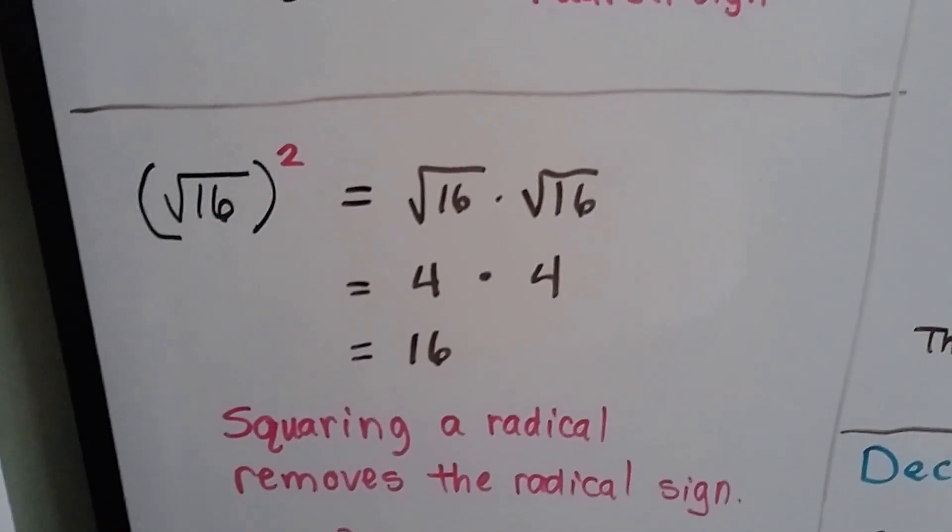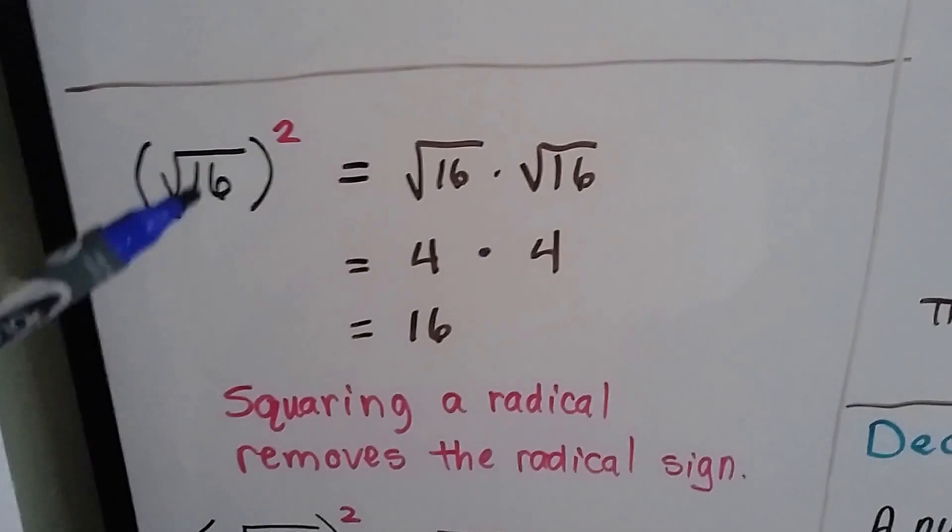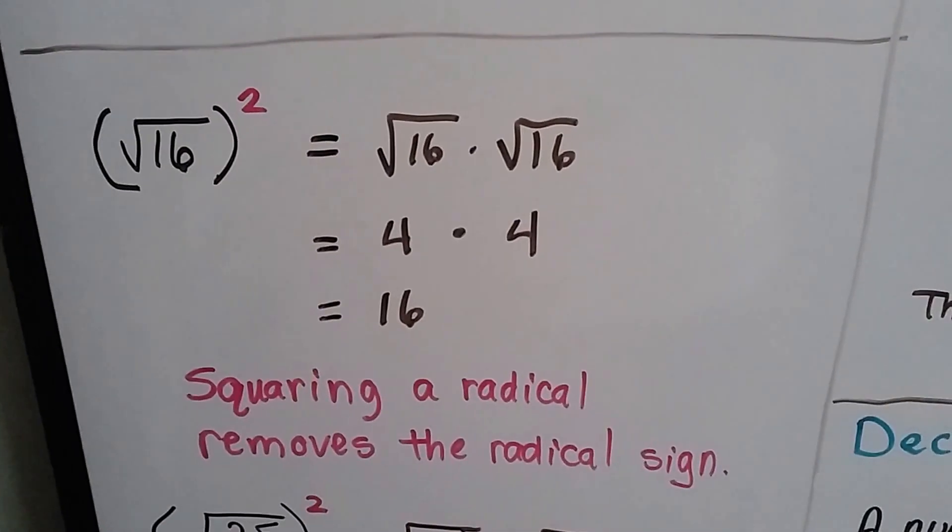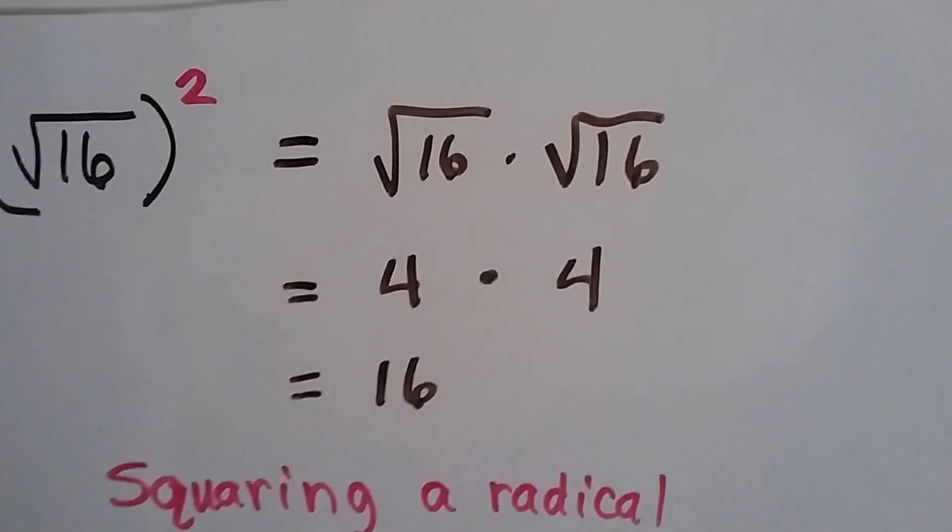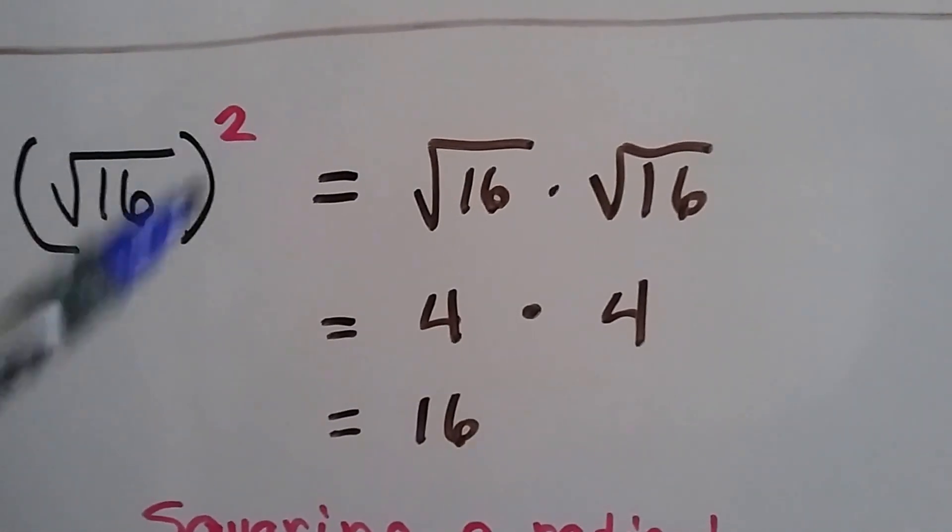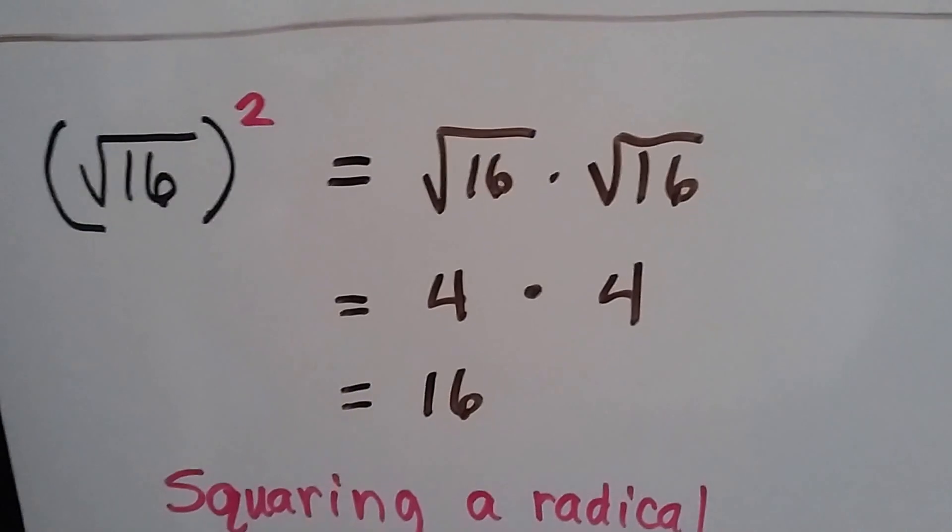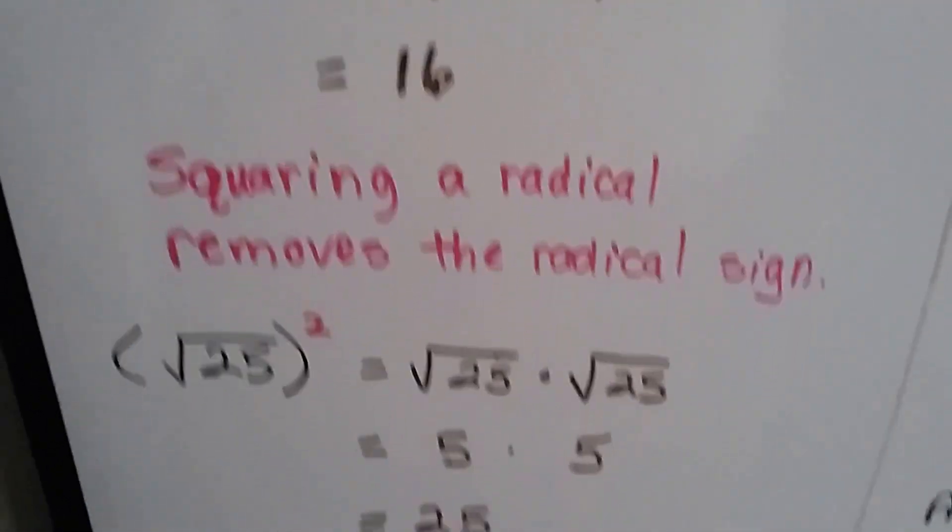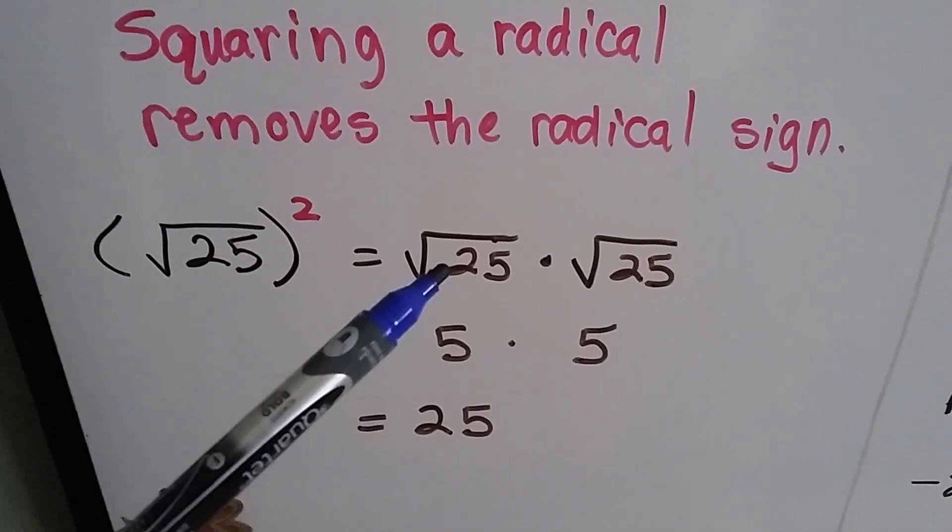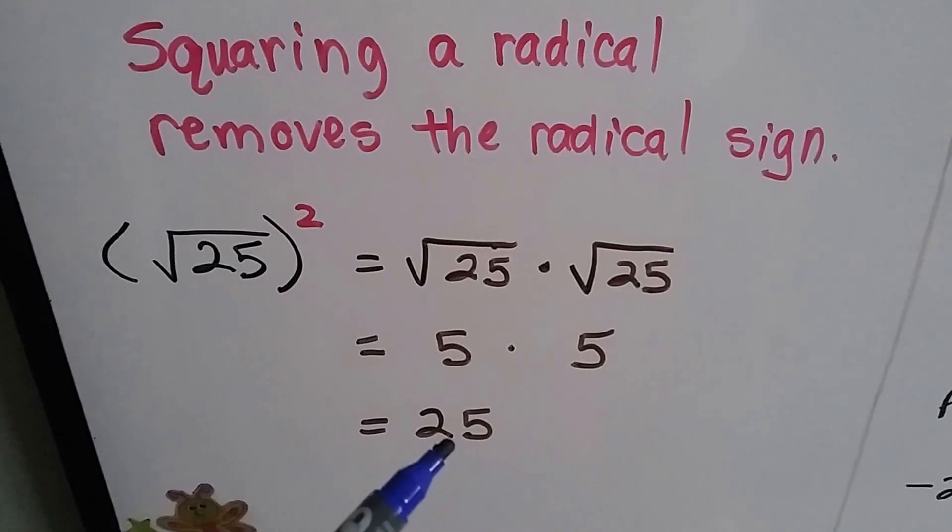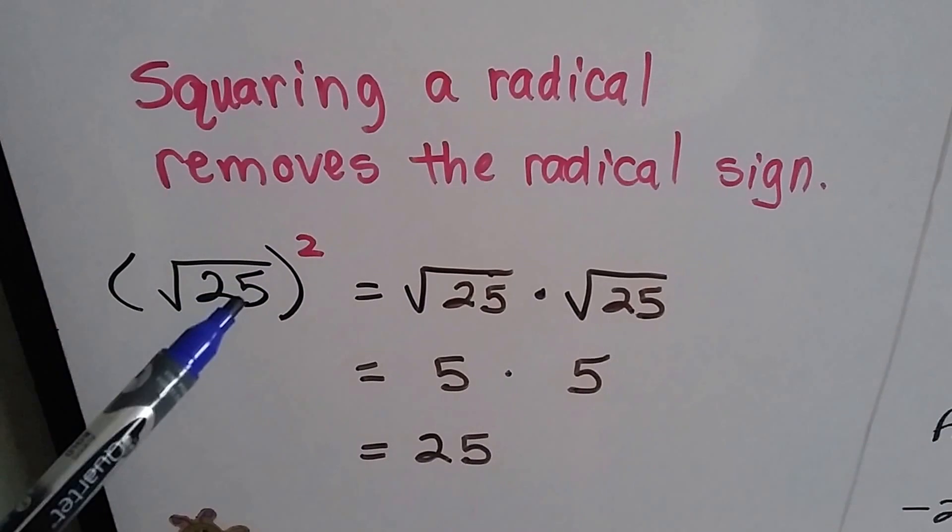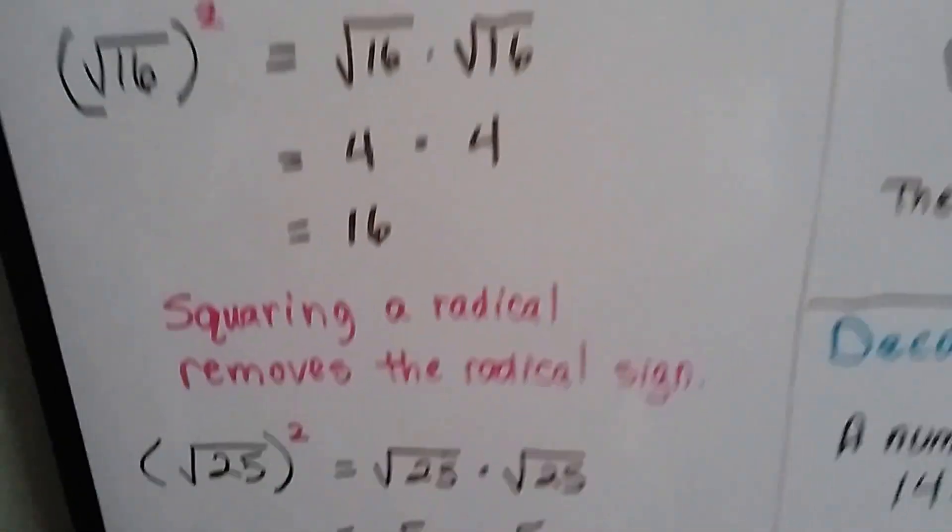Squaring a radical removes the radical sign. We talked about this in the last video. If we've got the square root of 16, and we square it, that means we've got 16 times 16. That means 4 times 4, and 4 times 4 is 16. By squaring it like this, we're just pulling off the radical sign. It's just whatever the radicand was. If we have the square root of 25 and we square it, that's the square root of 25 times the square root of 25 is 5 times 5, which is 25. You put a little 2 exponent up there to square it, and you pull the radical sign off.